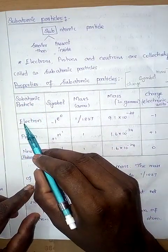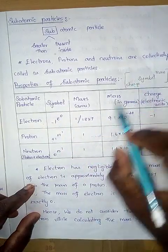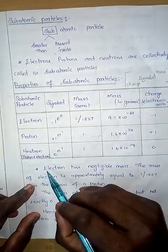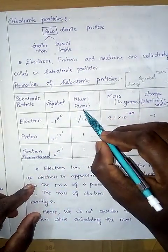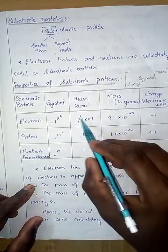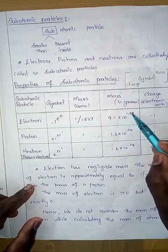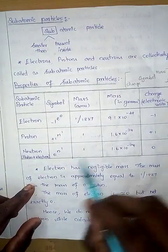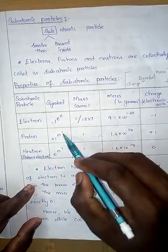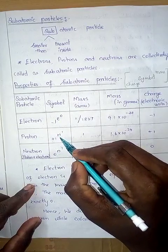Now let's look at the properties of subatomic particles. The first is the electron, represented as ₋₁e⁰ — minus one means its charge, e is the symbol, and zero is its mass in AMU. The mass of an electron is 1/1837 AMU, and in grams it is 9.1 × 10⁻²⁸ grams. Its charge is minus one in electronic units. For the proton, represented as ₊₁H¹ — plus one is the charge, H is the symbol, and one is the mass in AMU.